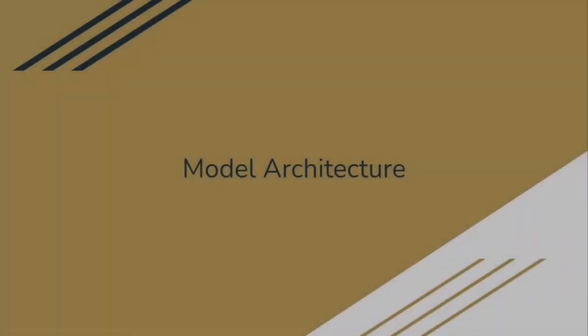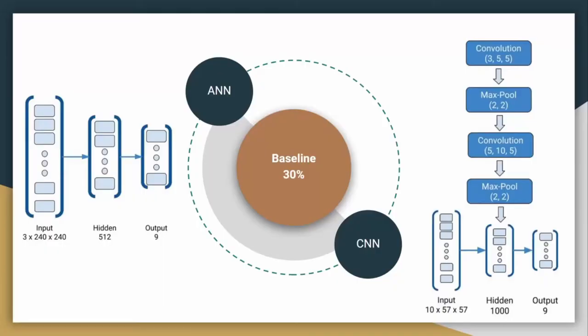Now, let's talk about our baseline and main models. For our baseline, we decided to go with a simple ANN and a CNN, rather than another algorithm like random choice, which would give us an accuracy of 11% for the nine classes. Compared to our ANN and CNN, which resulted in an accuracy of 30%, making it more suitable for us as a baseline.